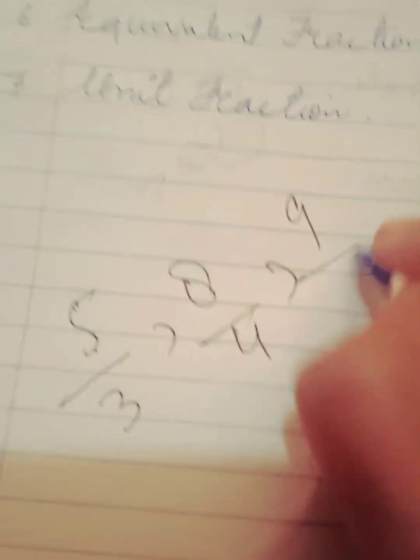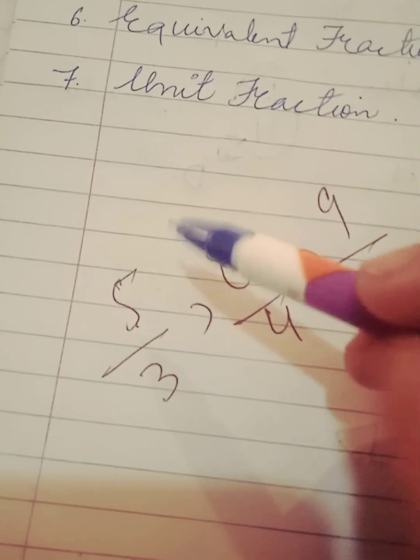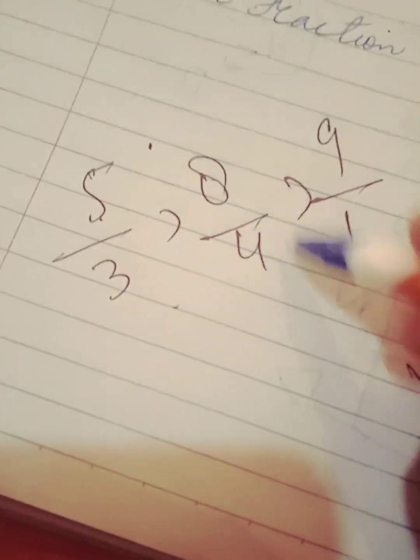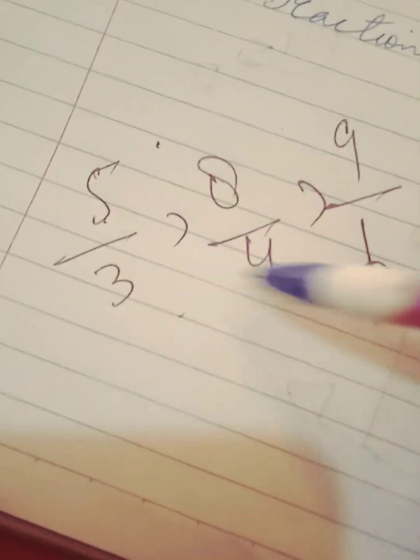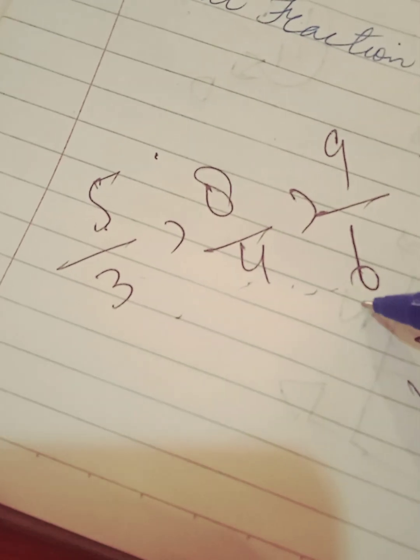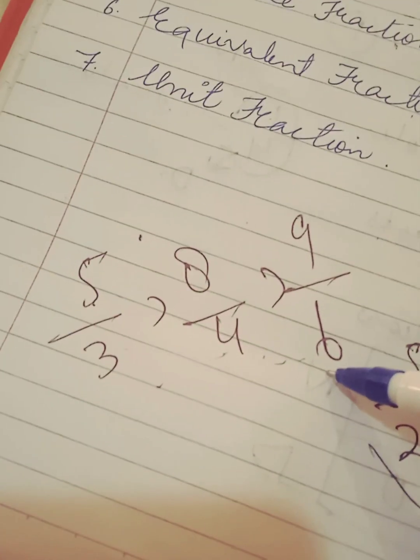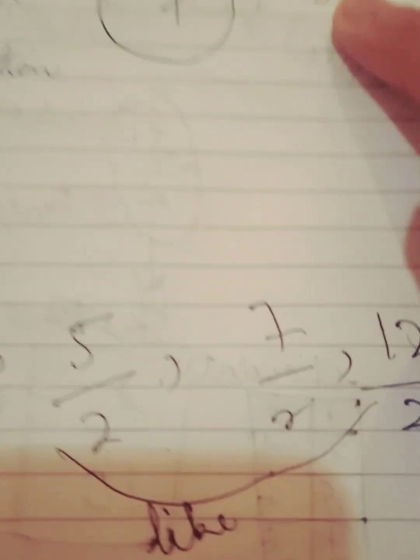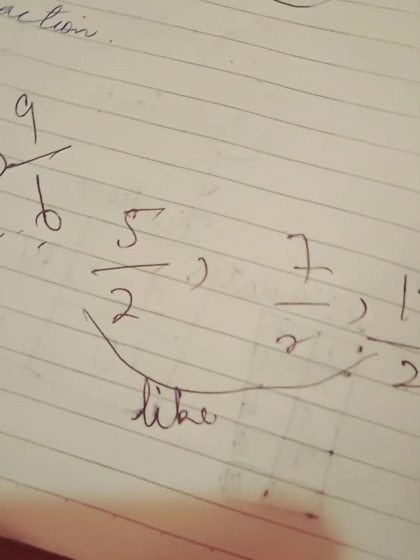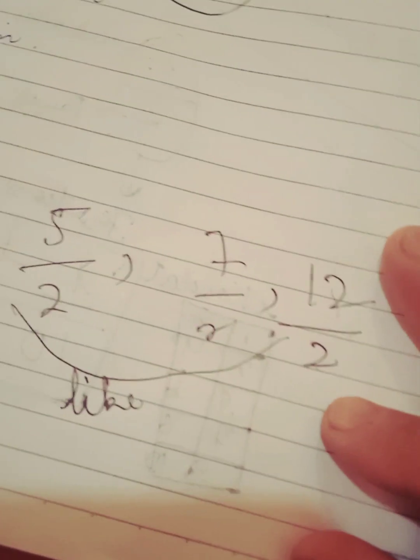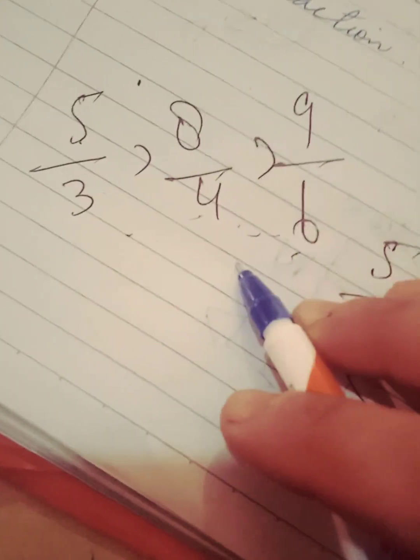Unlike fractions are fractions whose denominators are different. For example: 5/3, 8/4, 9/6 — the denominators 3, 4, and 6 are all different. So these are unlike fractions. In like fractions, numerators may differ but denominators are the same; in unlike fractions, the denominators are different.